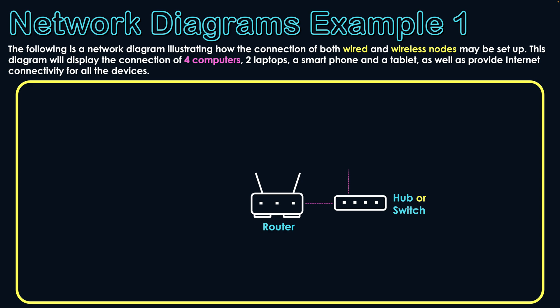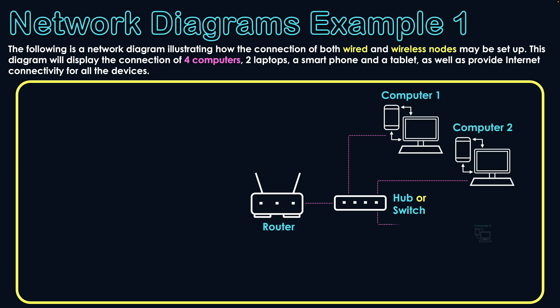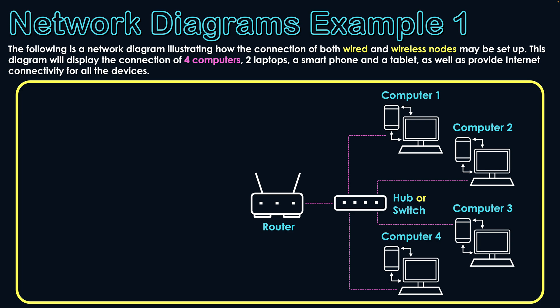I need one of those central nodes — a hub or switch — connected to my router so I can connect these four computers to my actual network. Since I'm using a hub or switch, it would be a physical Ethernet connection, with the four computers all physically wired directly to the hub or switch.